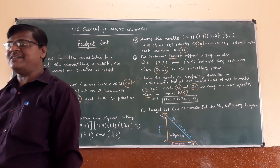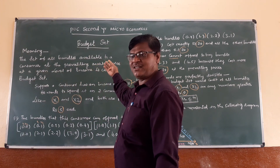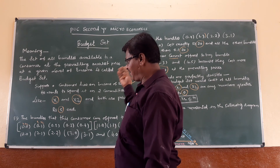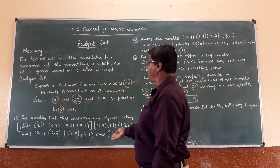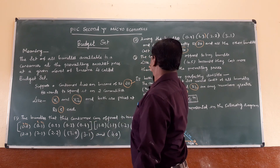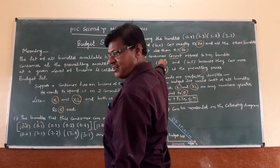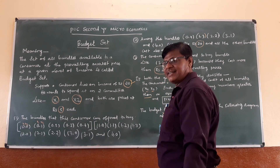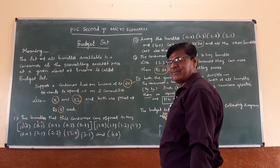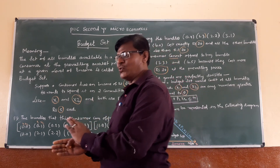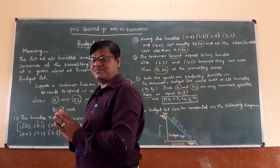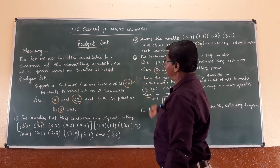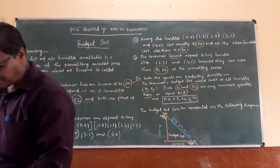Do you understand? It's clear. Study well. The consumer can offer three options: one is the consumer can afford certain combinations; the second is he cannot afford certain combinations because the cost is more than his income. The budget line slopes downward, indicating that p1·X1 plus p2·X2 equals Y. This is called the budget set. Thank you.